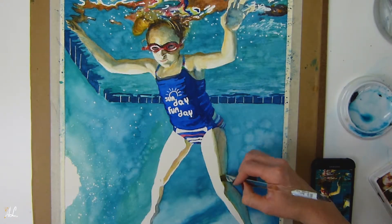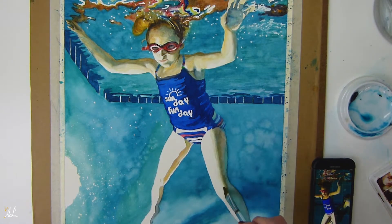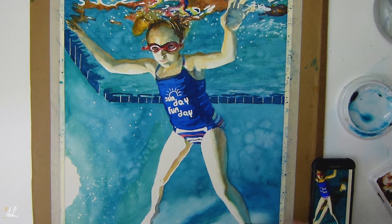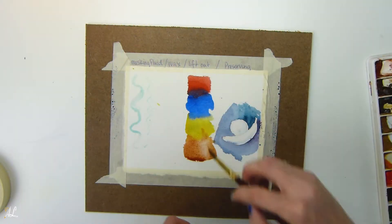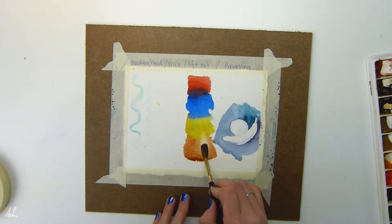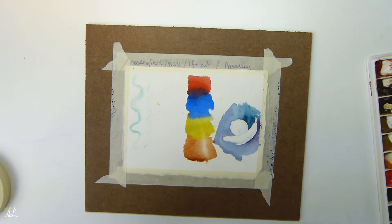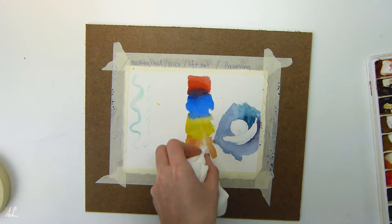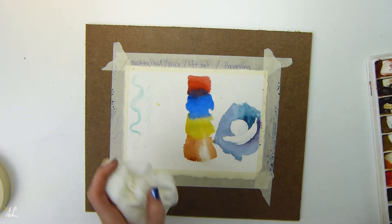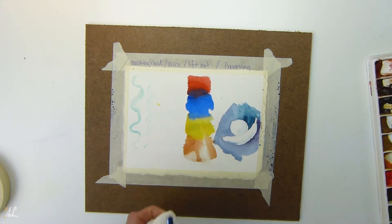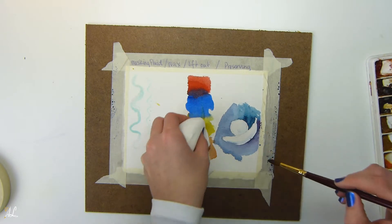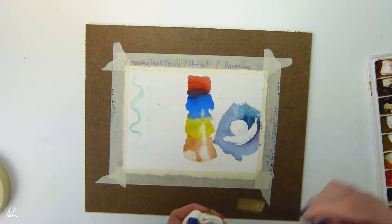Now to lift out is exactly how it sounds. You're just going to be using your brush or a paper towel to lift out your paint color. Usually you'll do this when the paint is fairly wet. You just go over it with a damp brush. Using the brush will give you more control. So if you wanted a certain shape or a line like this that would be the best. Whereas if you use your paper towel it'll be a larger softer shape.